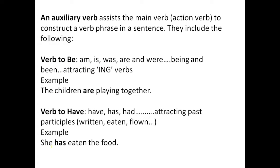For instance: she has eaten the food. Has is the auxiliary verb and eaten is the main verb. Together they form what we refer to as a verb phrase. Has could only be seen to be an auxiliary verb if it sits next to an actual verb — if it is assisting that actual verb. Otherwise it could be another kind of verb.